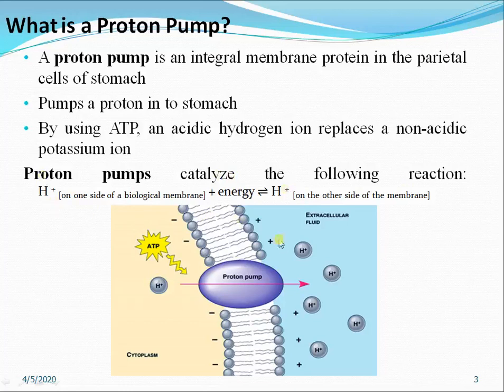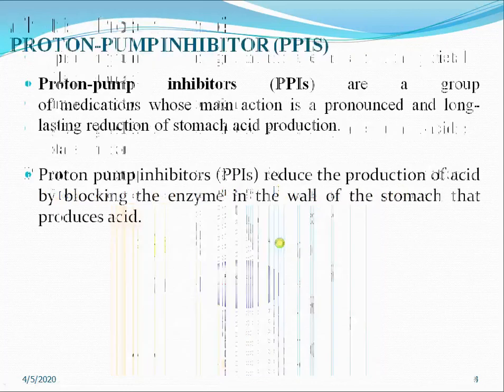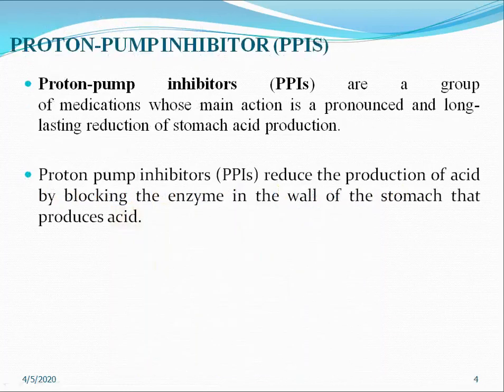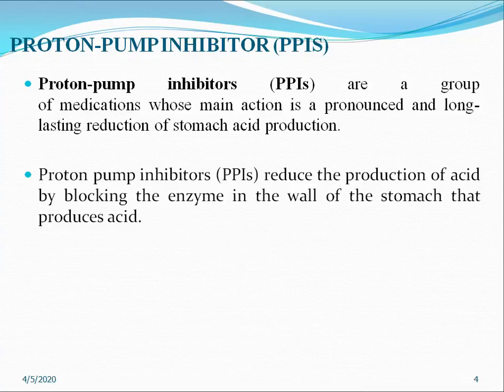Proton pump inhibitors are a group of medications whose main action is a pronounced and long-lasting reduction of stomach acid production. These inhibitors reduce the production of acid by blocking the enzyme in the cell wall of the stomach that produces acid.